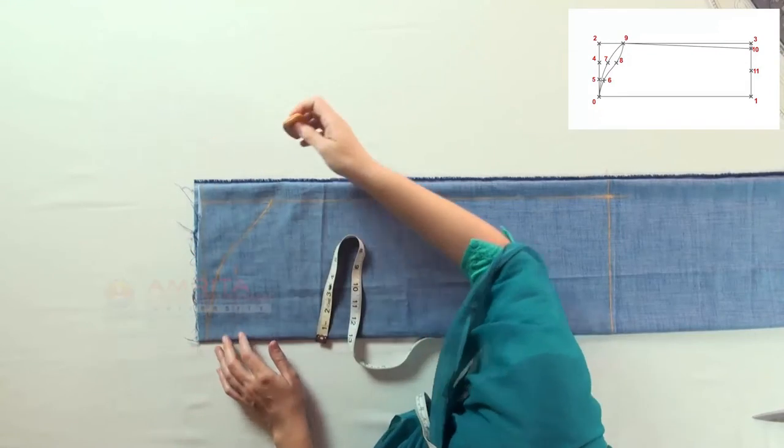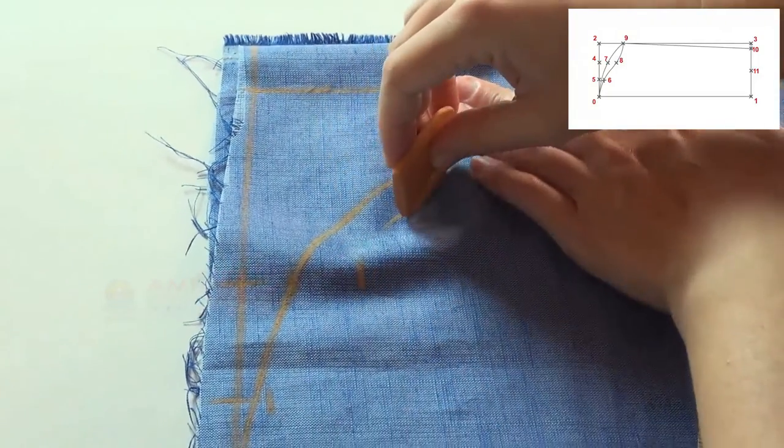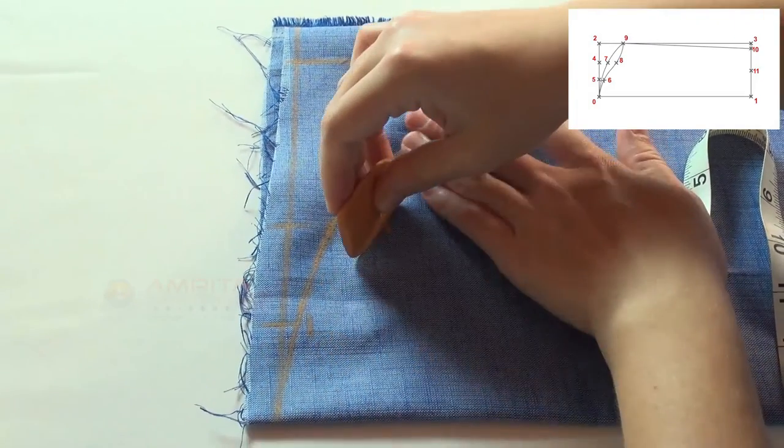This is for the back sleeve head. Now join points nine, eight, six, zero in a slight curve as shown. This is for the front sleeve head.